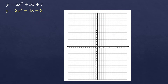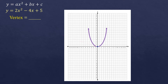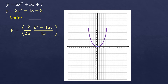We already know our graph opens upwards, but we don't know where it is located. It can be in the first, second, third, or fourth quadrant, or exactly at the center. That's the reason why we need to find the vertex of the graph — to know where it is located. The vertex is at the bottom of the graph. There is a formula for the x-coordinate of the vertex: negative b over 2a. The y-coordinate formula is b squared minus 4ac, all over 4a.